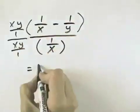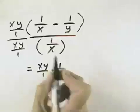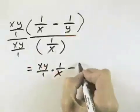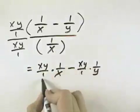When I do that, I'll have xy over 1 times 1 over x for the first term, minus xy over 1 times 1 over y for the second term.